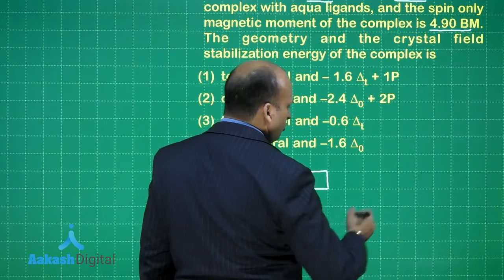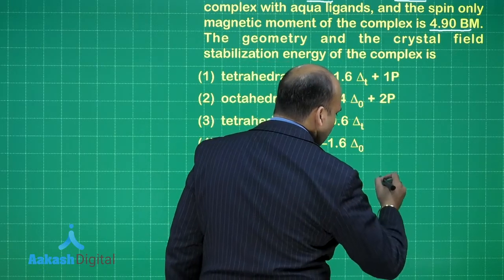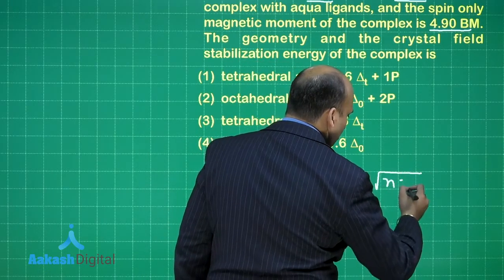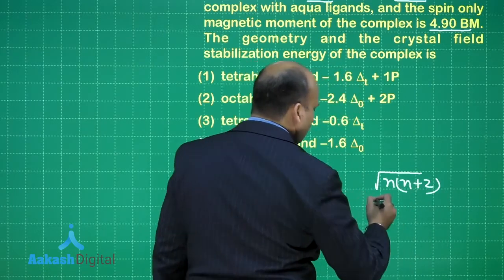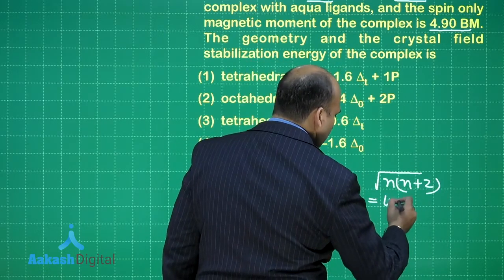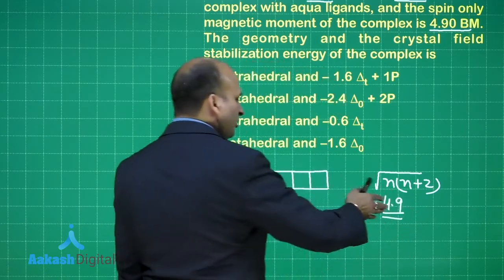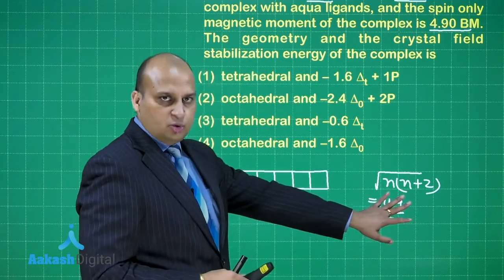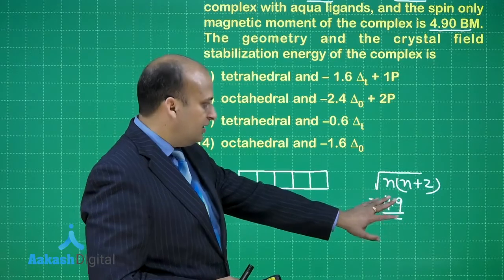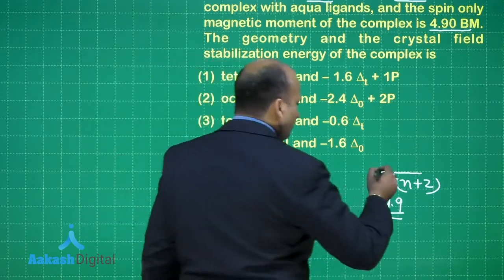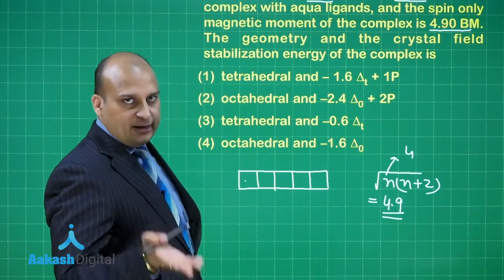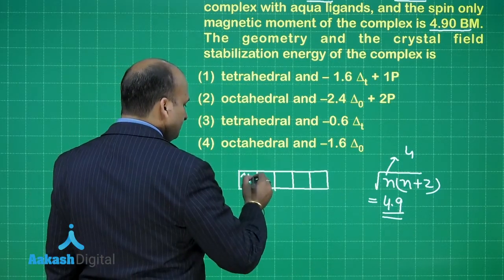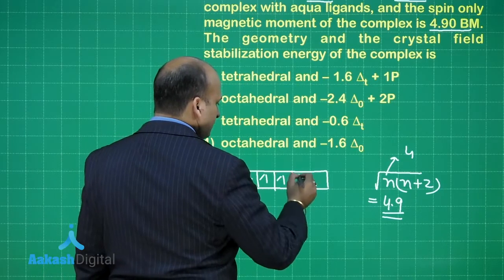But are they like 2 to 2 or 2 over here and then 1 in each, how do we come to know? To help you out, they have given you the Bohr magneton value of 4.9. So the spin only magnetic moment is given by the formula under root of n into n+2 and the value of this is given to be 4.9. So basically, if you square it up, it will be nearer to 24 which means that the value of n should be equal to 4 which means that there are 4 unpaired electrons. So, how you should fill it up? This is how.